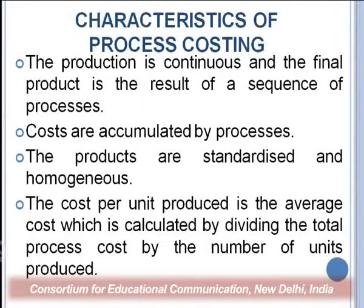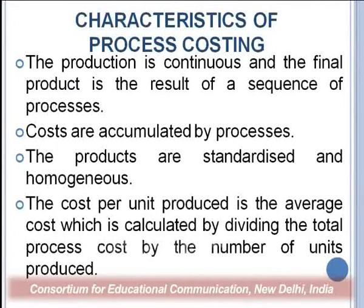Now let us discuss the features of process costing — the characteristics — so that we understand what process costing is about, not from the accounting point of view but from the understanding point of view: where process costing is used and what its nature is. The production is continuous and the final product is the result of a sequence of processes. Costs are accumulated by each process, and at each cost center the cost is calculated separately. The products are standardized and homogeneous. The cost per unit produced is the average cost, calculated by dividing the total process cost by the number of units produced.